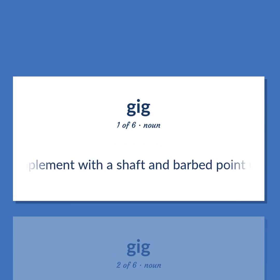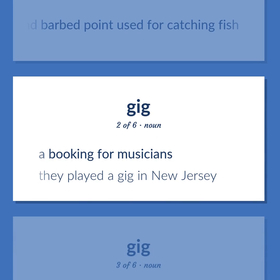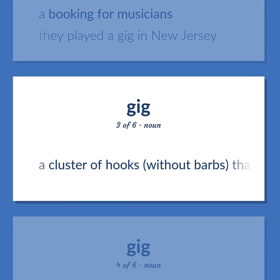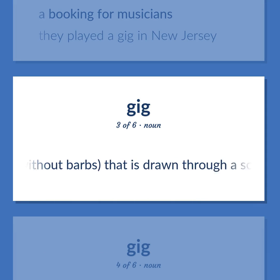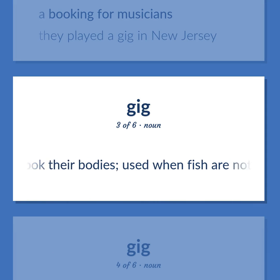Gig: An implement with a shaft and barbed point used for catching fish. A booking for musicians — they played a gig in New Jersey. Also, a cluster of hooks without barbs that is drawn through a school of fish to hook their bodies, used when fish are not biting.